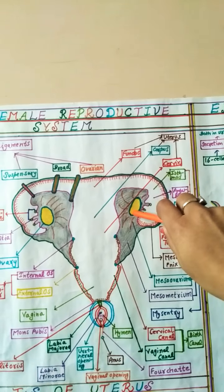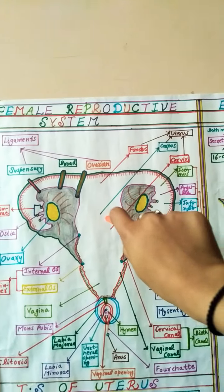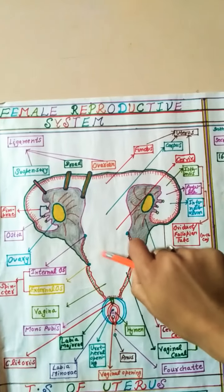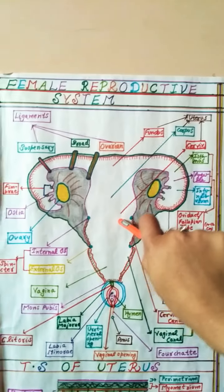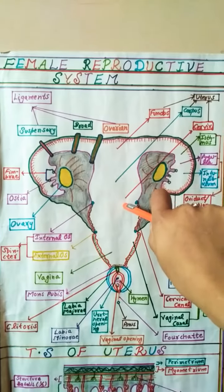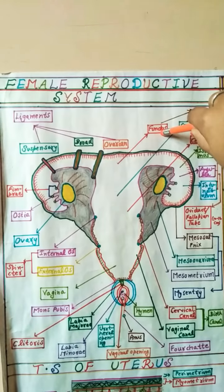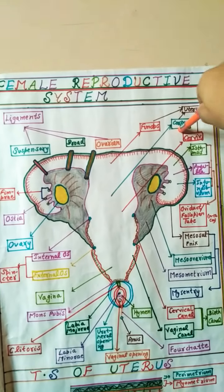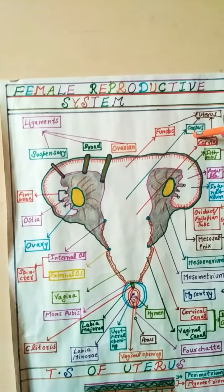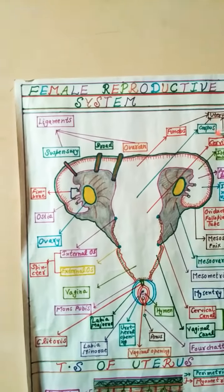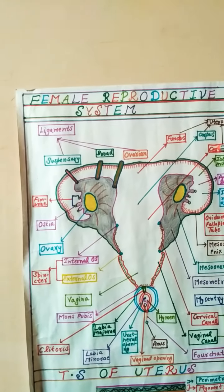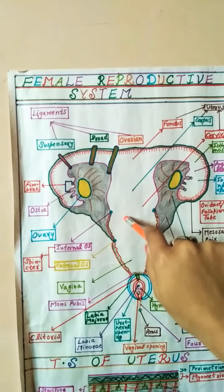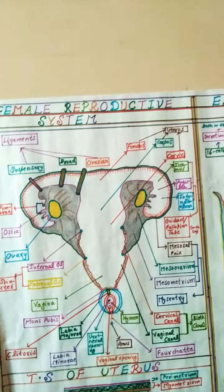The uterus consists of three portions: the fundus, which is dome-shaped; the corpus, where implantation occurs; and the cervix, which has a cavity called the cervical canal.